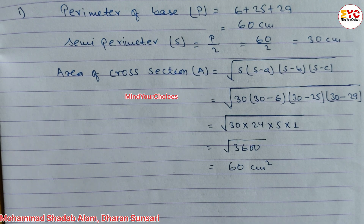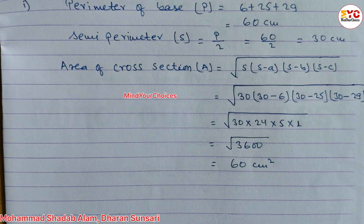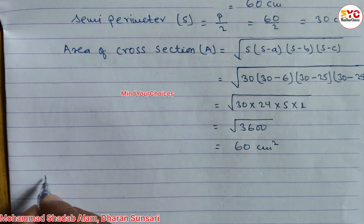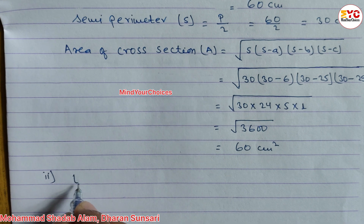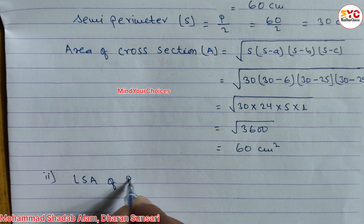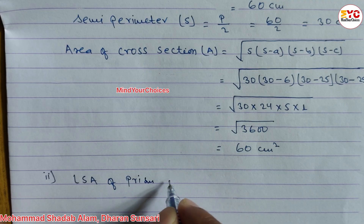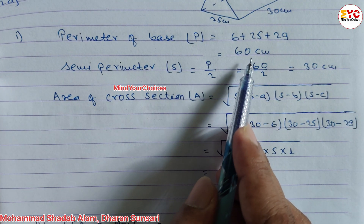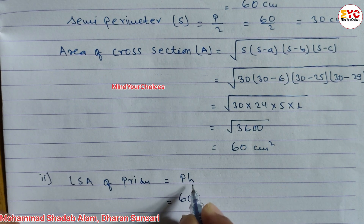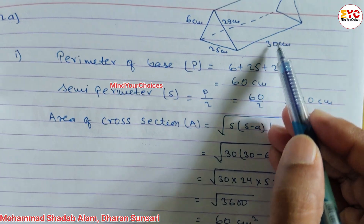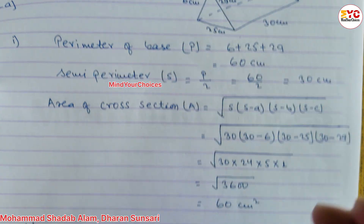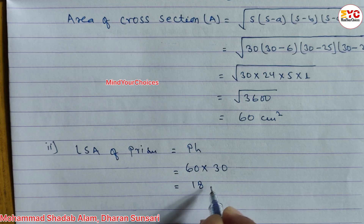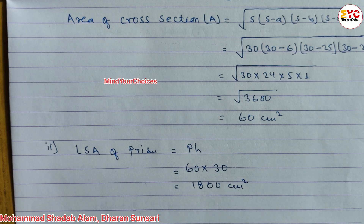So area of cross-section = 60 cm square. In number 2, we have to find out the LSA — lateral surface area. LSA of prism formula is P into H. P means perimeter of base, which is 60. Height of prism is 30 cm. So LSA = 60 × 30 = 1800 cm square.